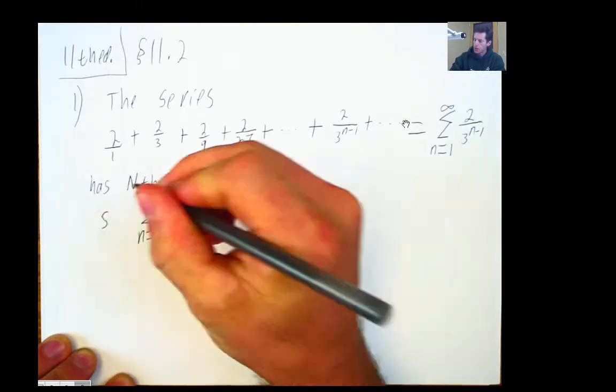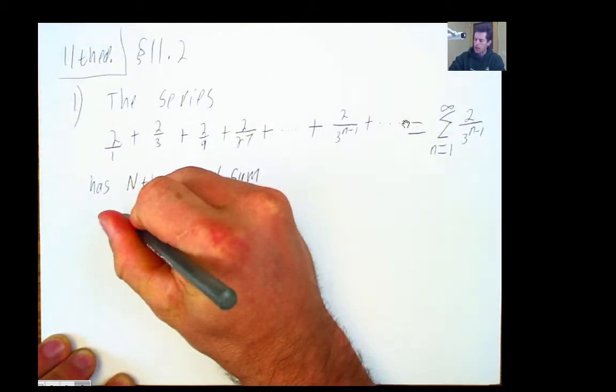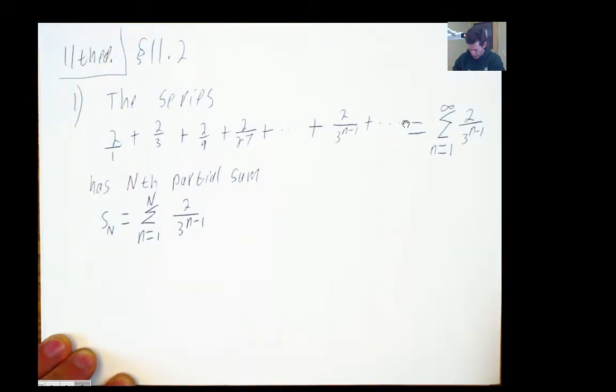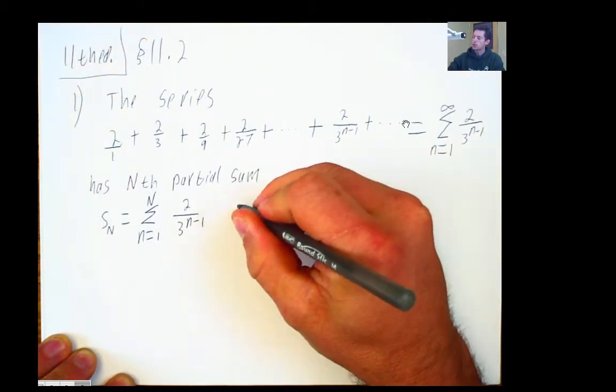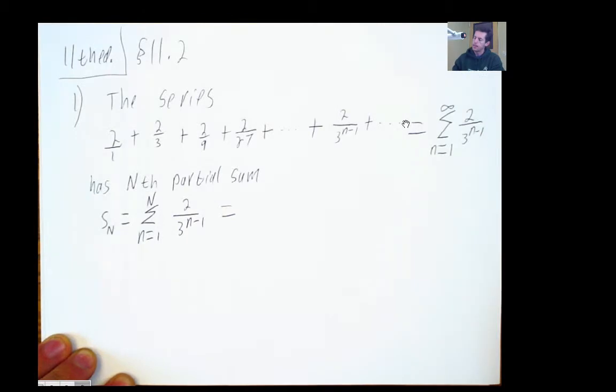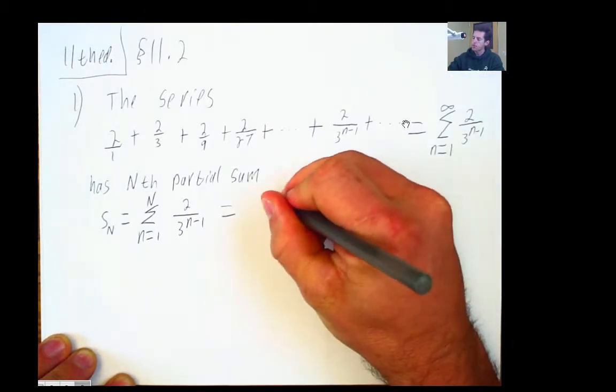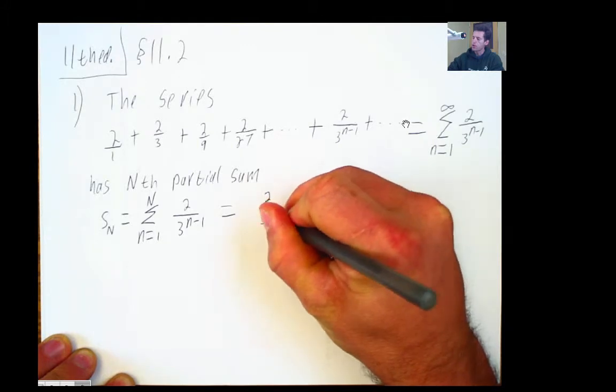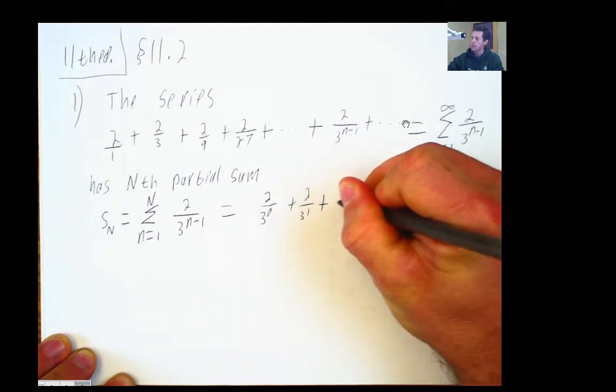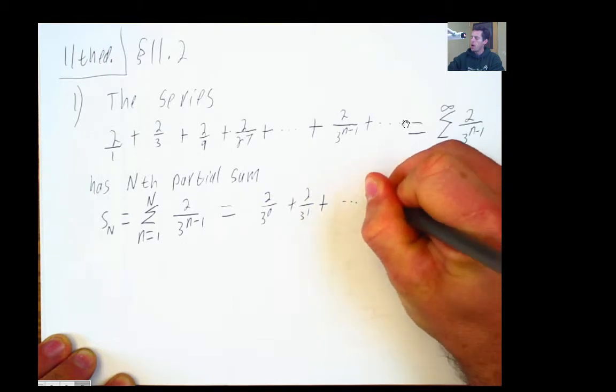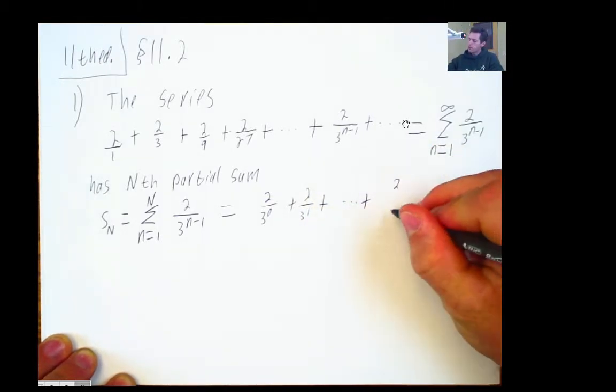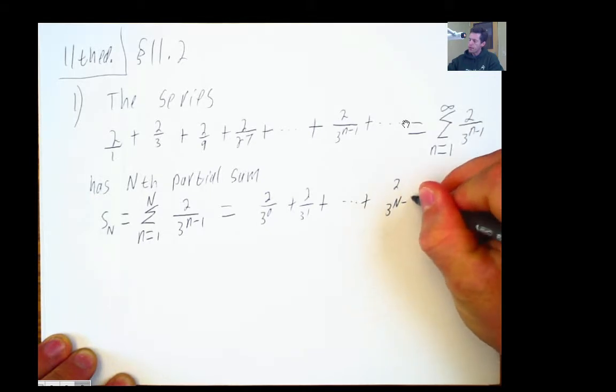I remember reading in the book that the nth partial sum, when written out, looks like 2 over 3 to the 0th plus 2 over 3 to the 1st plus... And let me put in some ellipses here. 2 over 3 to the capital N minus 1.